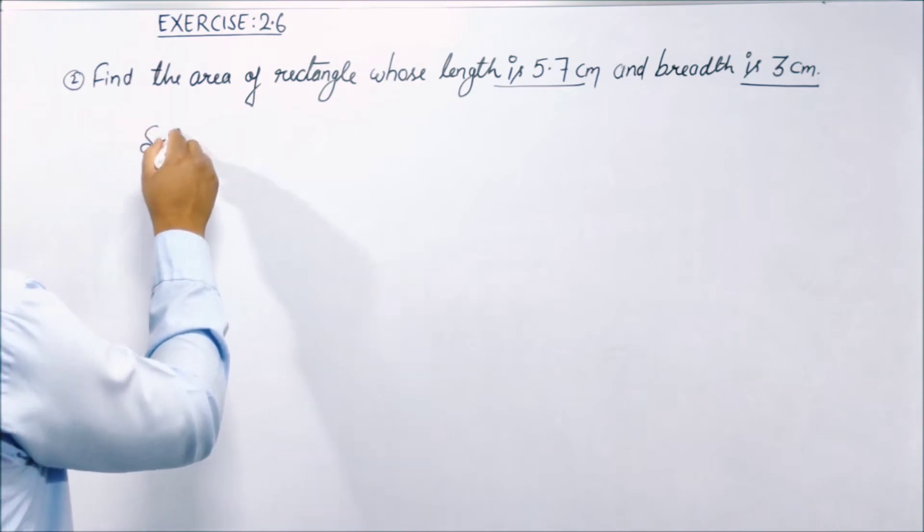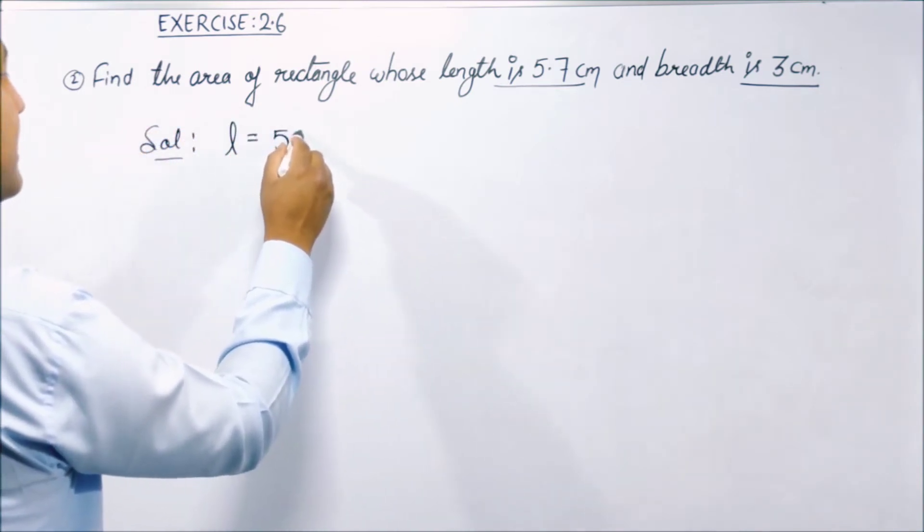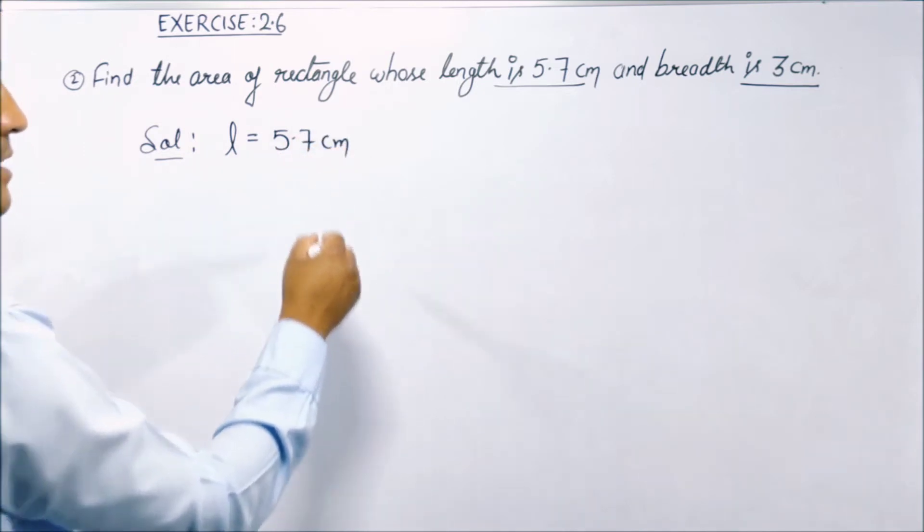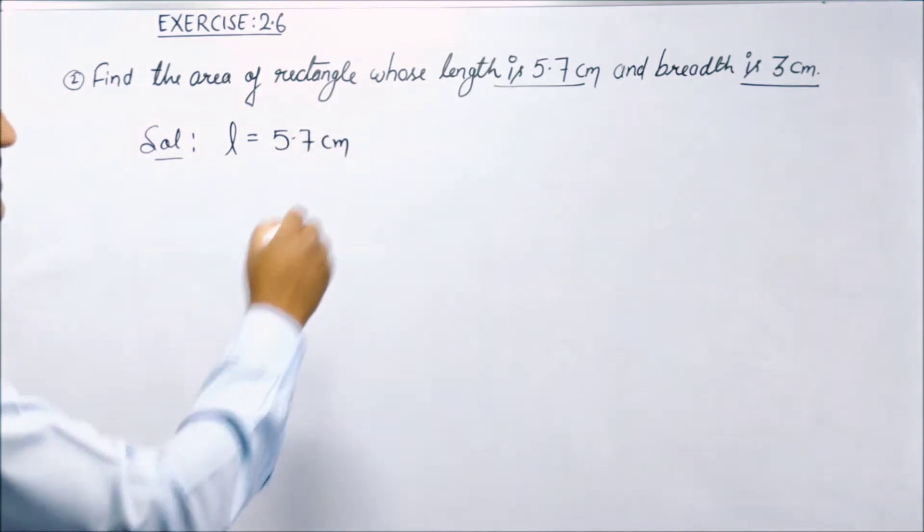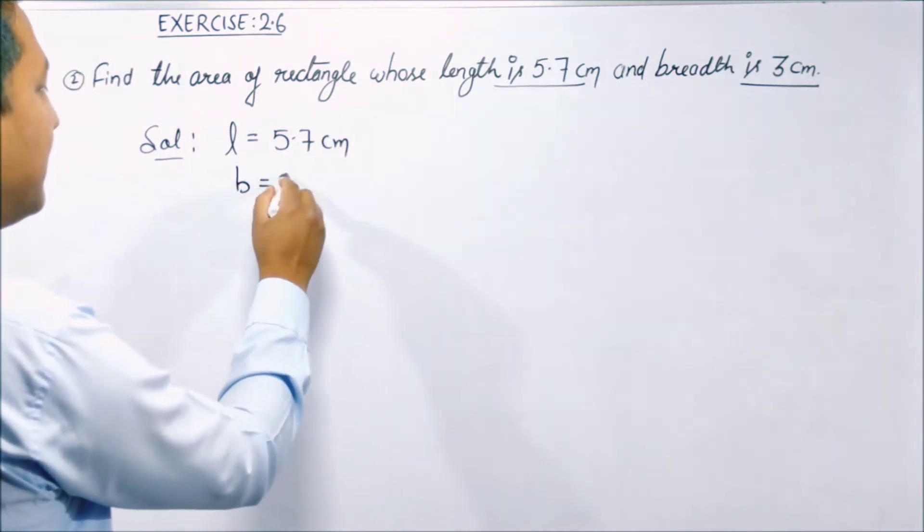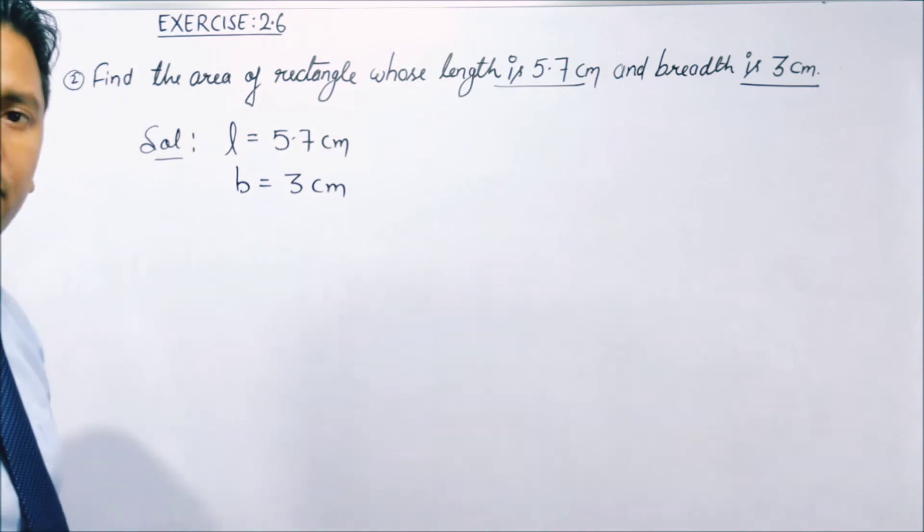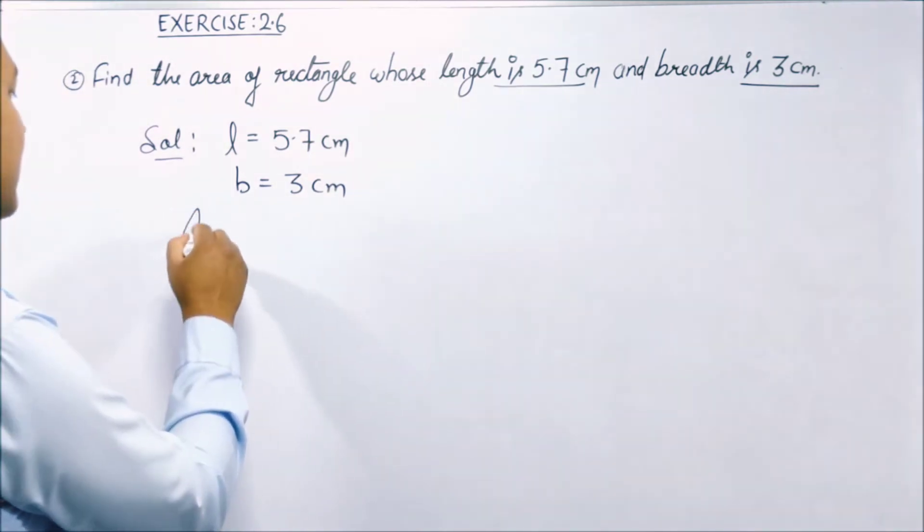Solution. तो length is 5.7 centimeter given है हमें. Breadth कितनी दी है? 3 centimeter. तो breadth भी हमने लिख लिया है 3 centimeter. और अब जो find करना है वो area find करना है - area of rectangle.